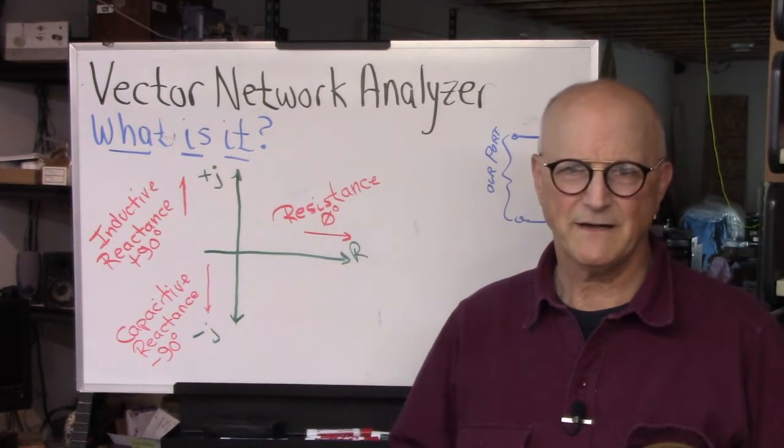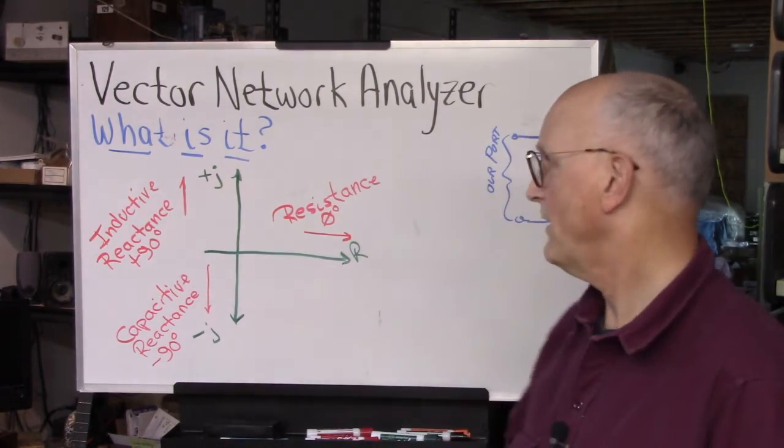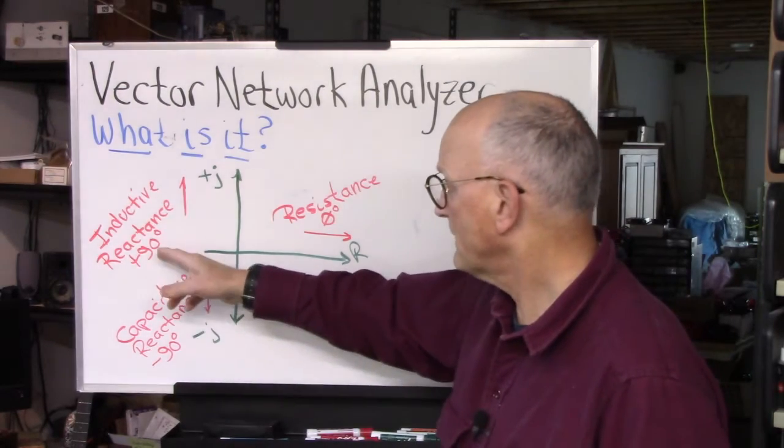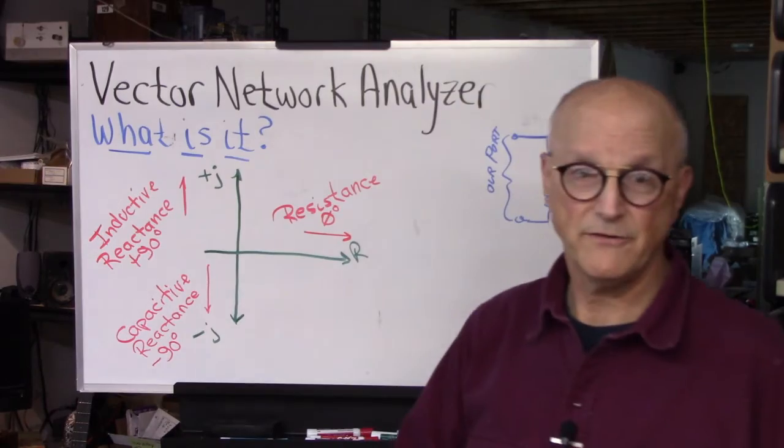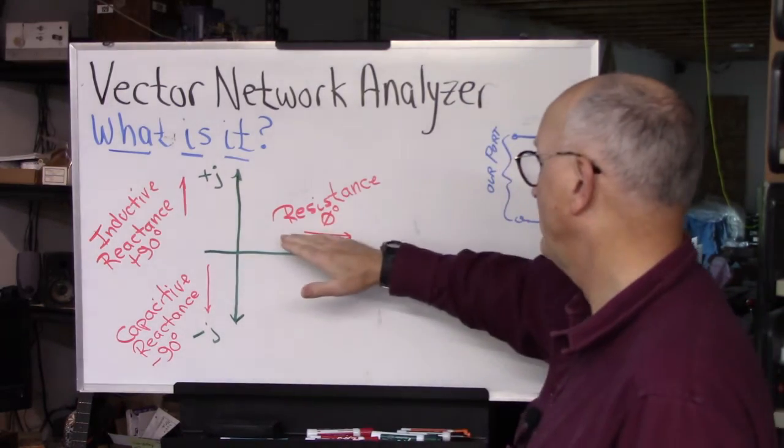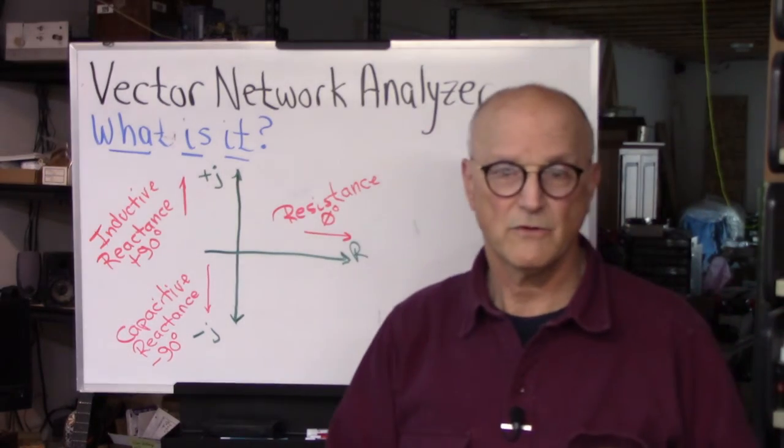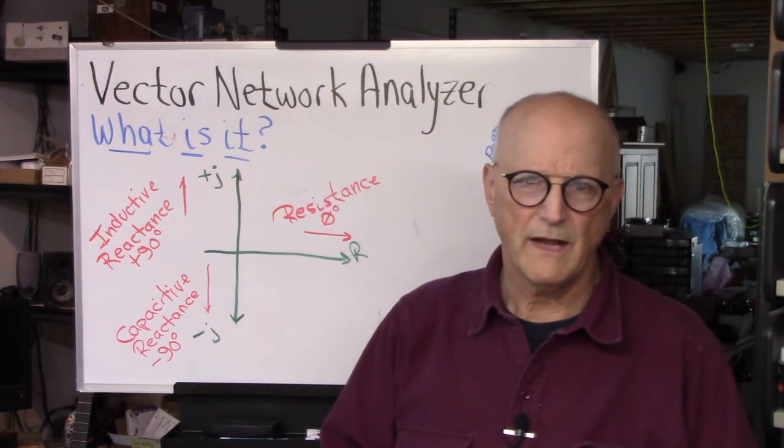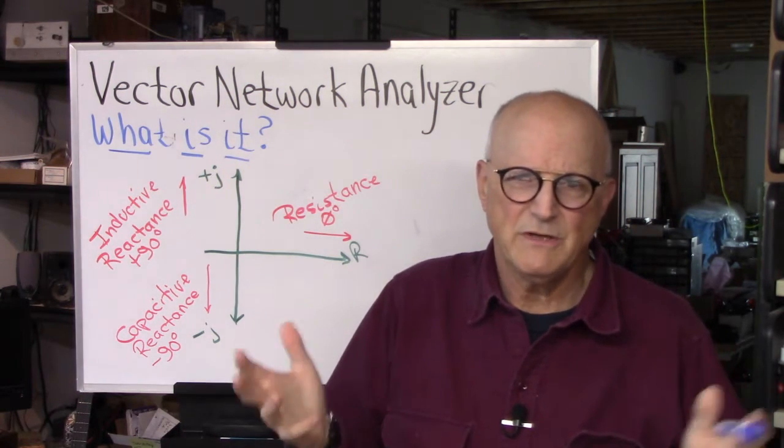So what is this Vector business? Well, with capacitive reactance being at minus 90 degrees and inductive reactance being at plus 90 degrees and resistance being at zero degrees, combinations of these components will have phases that are somewhere in between these values.